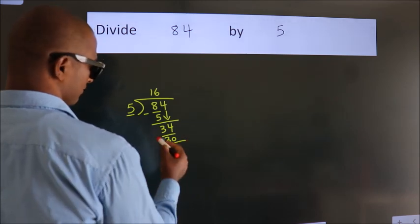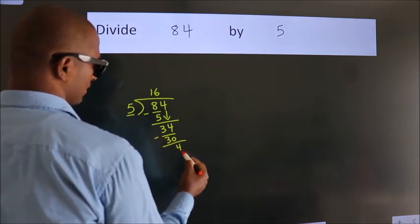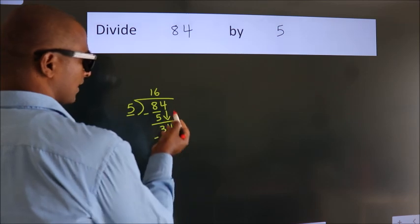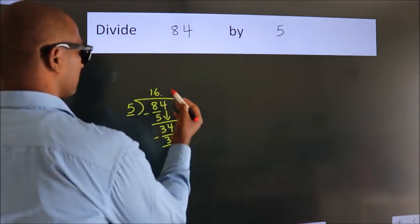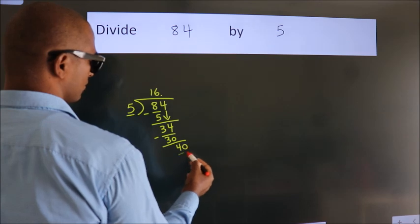Now we subtract. We get 4. After this, no more numbers to bring it down. So what we do is, we put dot, take 0. So 40.